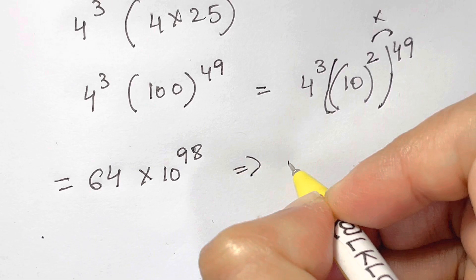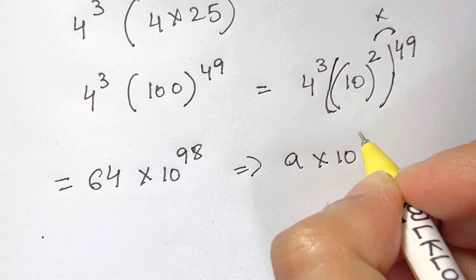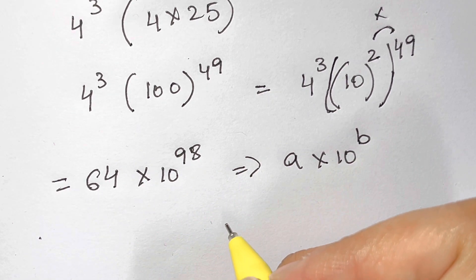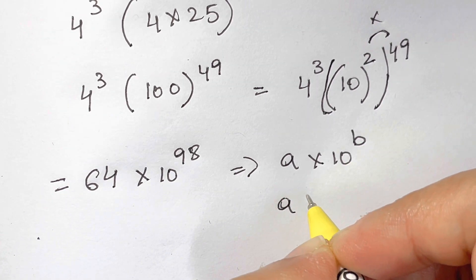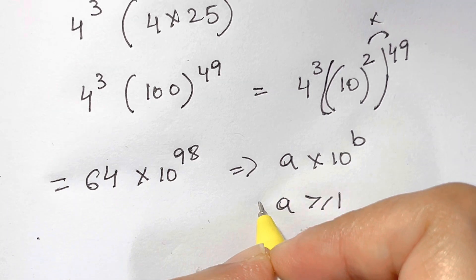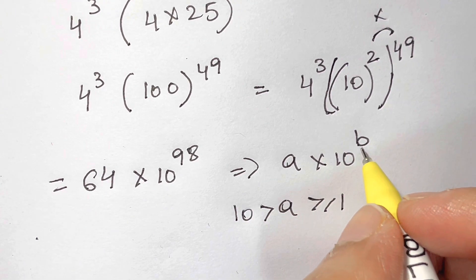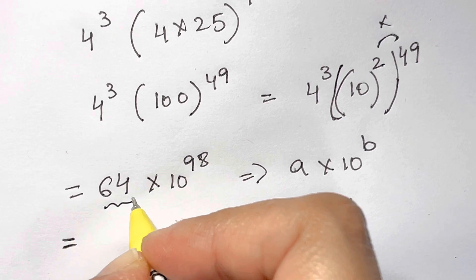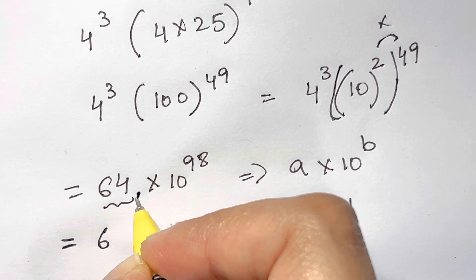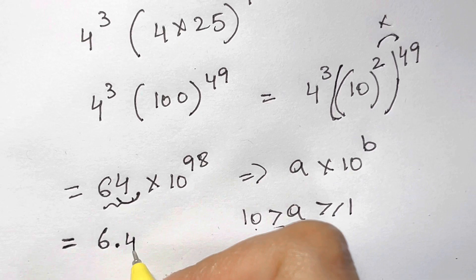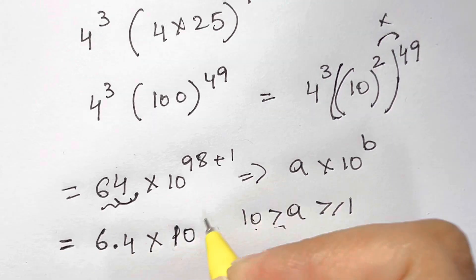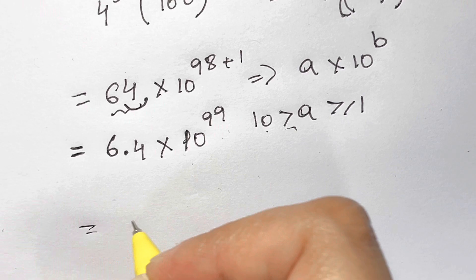As we can see, this is in the form of something like this: a into 10 to the power of b, where a is 64 and here b is 98. But here a should be greater than or equal to 1 and smaller than 10, and b is just an integer. This term has to be less than 10, so I have a decimal. Move this one slot towards left, it becomes 6.4, and then here you add plus 1. When you move the decimal, 10 to the power of 98 plus 1 is 99.